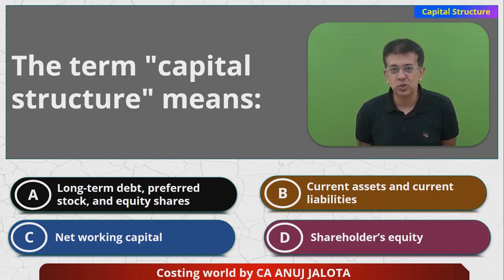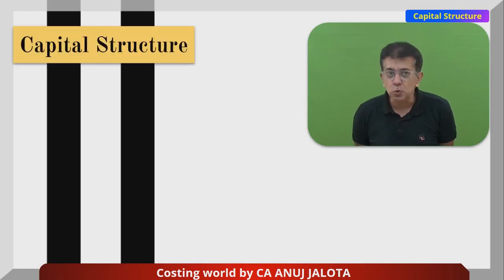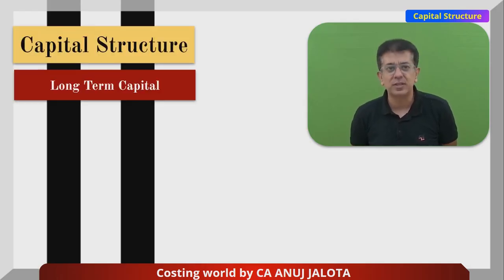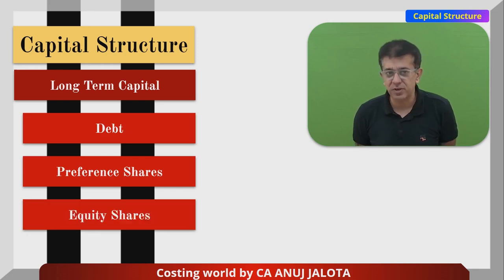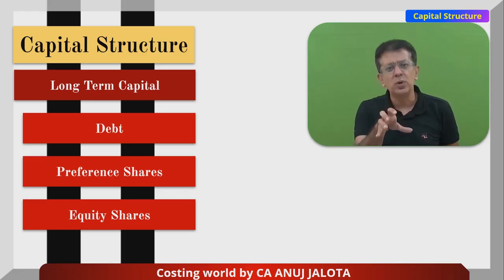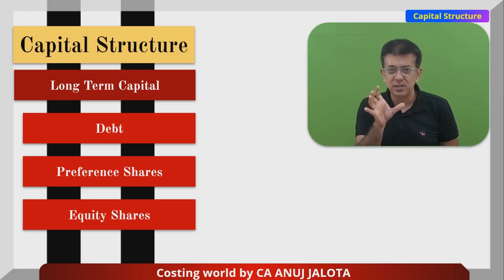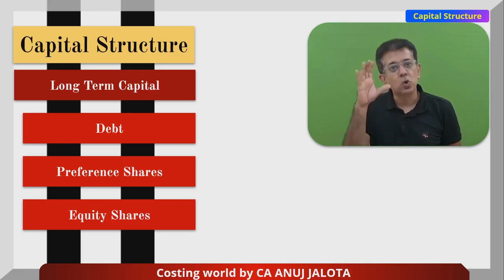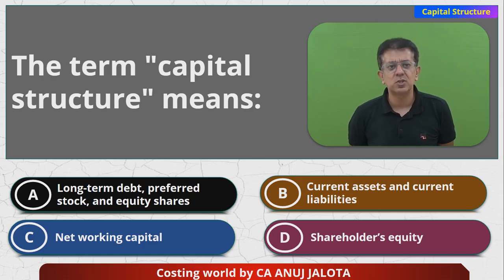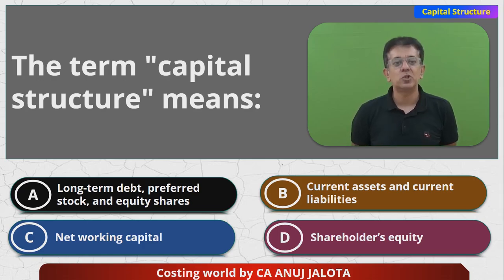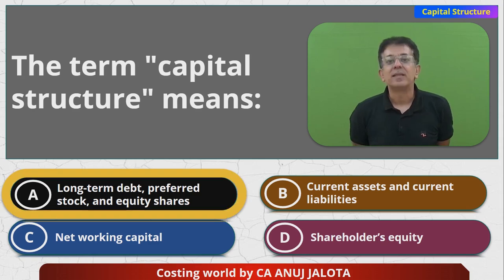But capital structure always means long term capital structure. Long term capital structure will usually constitute three things: first, debt; second, preference shares; and third, equity. Equity shares will usually include retained earnings also. So financial structure means your entire liability side, but capital structure means only long term sources — debt, preference, and equity. Out of the four options, the correct answer is option A.